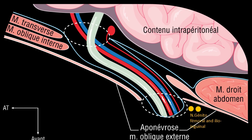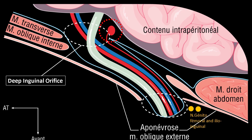Anatomically, there is another structure to know. It is the transversalis fascia, here represented by the blue line. It is a fascial membrane lining the deep plane of the transverse muscles and the superficial side of the peritoneal cavity. It invaginates at the level of the deep inguinal orifice to form a sheath with the spermatic cord or the round ligament.